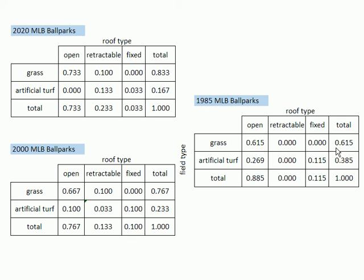grass has changed from 61.5 percent in 1985, and now we're up to 83.3 percent. It's kind of interesting to see those trends, and the joint relative and marginal relative frequencies allow us to notice those things and see how things change.